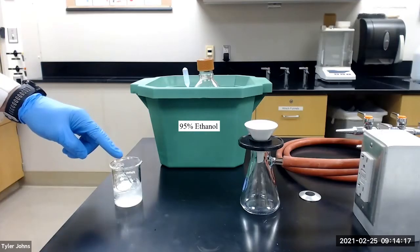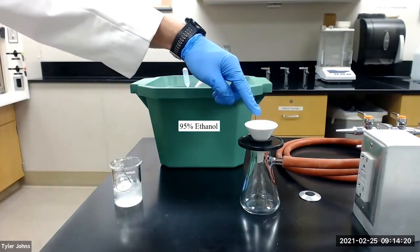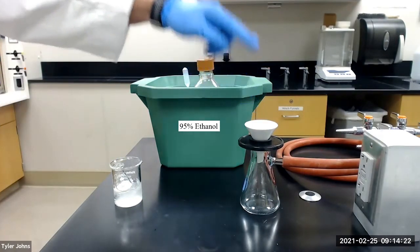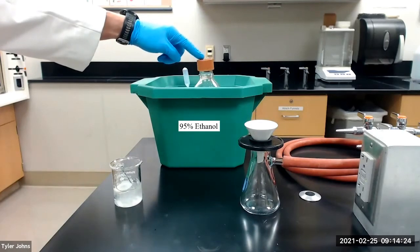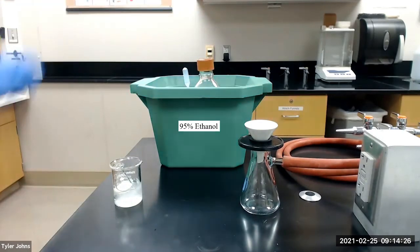After crystallization is complete, we will collect the crystals by vacuum filtration on a Hirsch funnel. We will use ice cold 95% ethanol to aid in the transfer of the crystals.